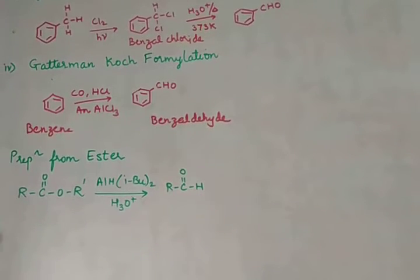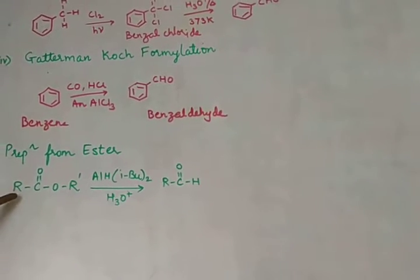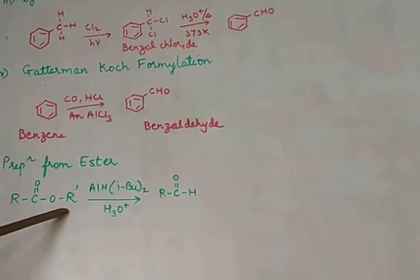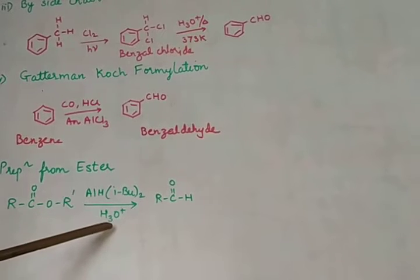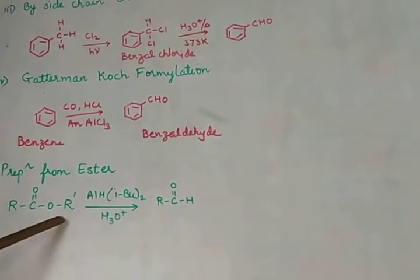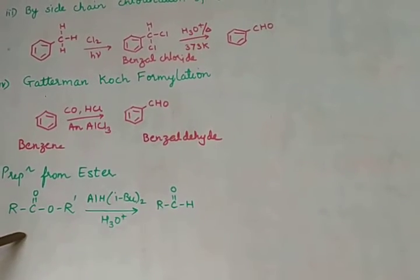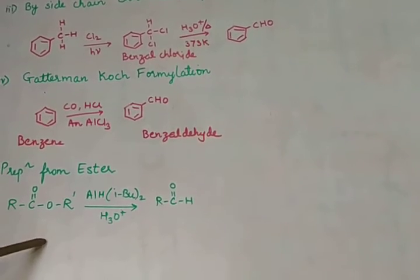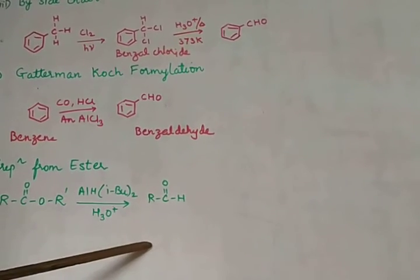Another method — preparation from an ester — is for aliphatic aldehyde. An ester with functional group RCOOR' is treated with diisobutyl aluminum hydride (DIBAL-H) and then acid hydrolyzed to give RCHO. Alcohol is also formed but is not shown as it is not the main product. For example, you can take the ester CH3COOCH3, treat it with this reagent, and an aldehyde will be formed.